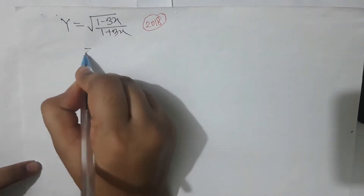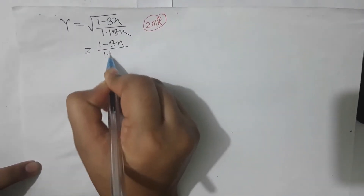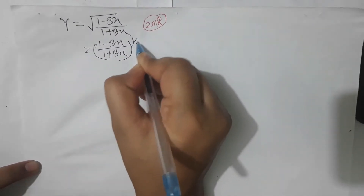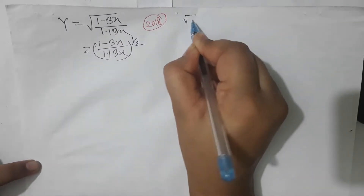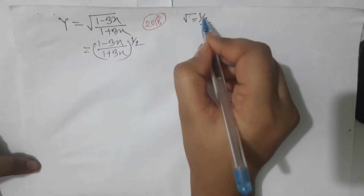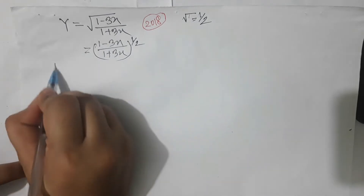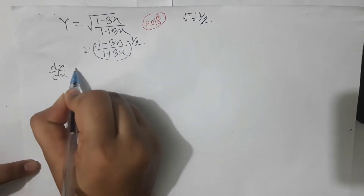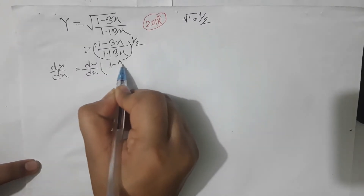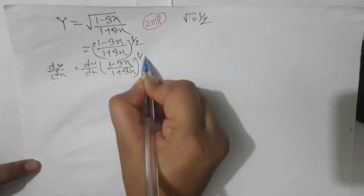First, let's move the root. The root is half — after substitution, equal to half. If you put the root into half, then you can write half. This is the differentiation: d/dx of (1 − 3x)/(1 + 3x), then half.